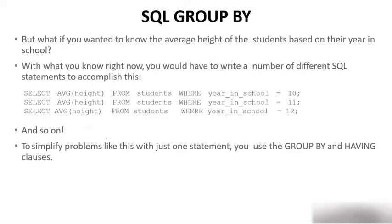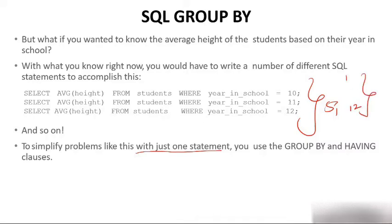To simplify the problem, we can use just one statement. Instead of writing three, five, or even 12 queries for class 1 through class 12, by using one query with GROUP BY and HAVING clause you can do this. See the beauty of GROUP BY and HAVING — without them, for 12 different classes you'd need 12 different commands, but with just GROUP BY we use only one query.